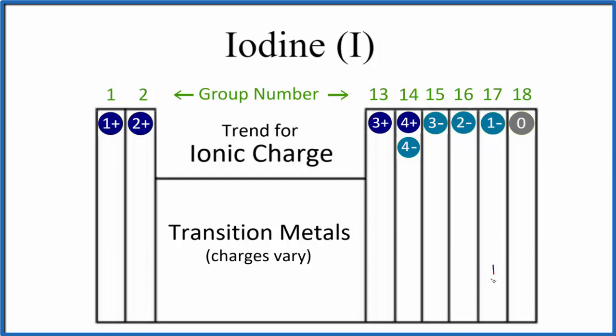Iodine, that's about right here on the periodic table. So iodine is in group 17. That means it'll form ions that'll have a one minus ionic charge.